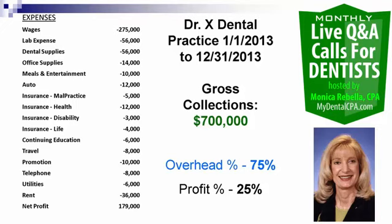We're looking at a GP practice for 2013. Collections were $700,000. At the very bottom, net profits are $179,000. So what this says is profit is 25% and overhead is 75%. That is a huge amount of overhead for a GP practice — really a lot.